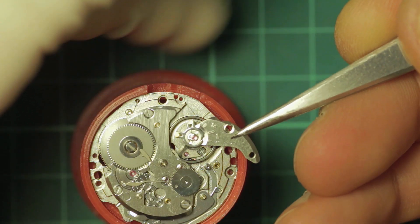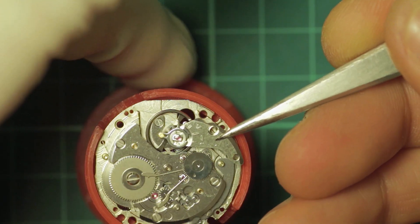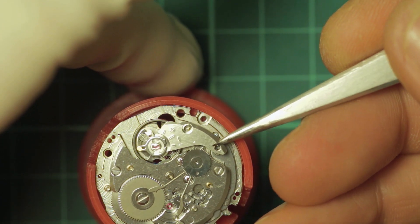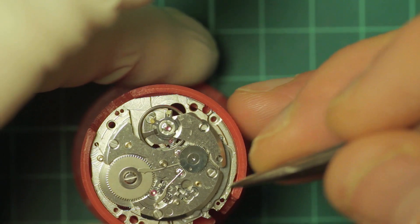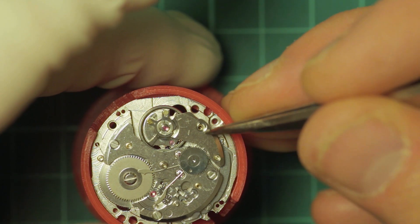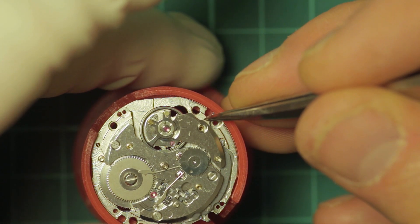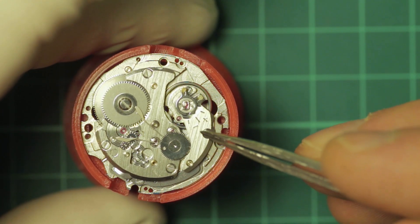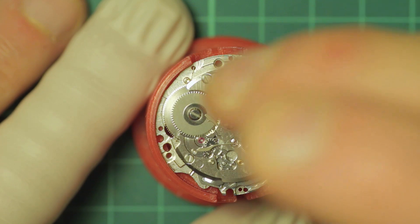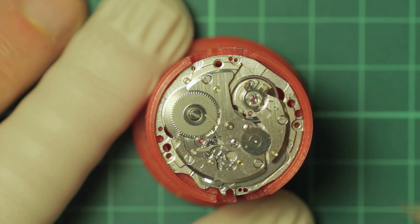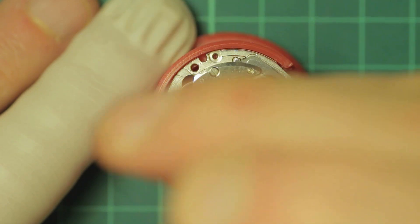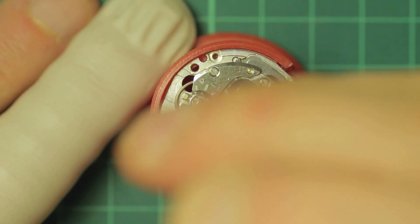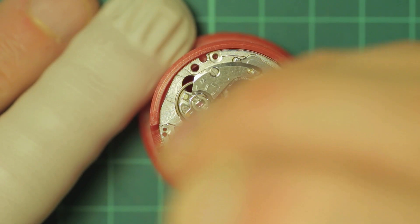So once they're replaced and the pallet jewels are oiled, the balance is refitted as you see here. And as it drops into place you'll see it starts to swing away. This is with just a single wind added to the barrel. I always do this on rebuild just to see that I've got an adequate amplitude which shows a nice clean running train. And then here I'm adding more winds onto the mainspring barrel to test that we are getting a suitable amplitude.